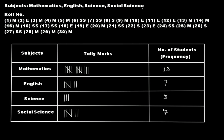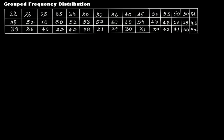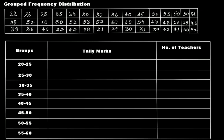In that tutorial we took an example with four entries: mathematics, English, science, and social science. For those four entries we made a frequency distribution table using tally marks. Now this concept of frequency distribution table fails when the number of entries or observations is too large, like what we are going to discuss now. Here we have 45 observations — the ages of 45 teachers of a school. This data is not well organized and you cannot conclude anything from it, so we use the concept of grouped frequency distribution.